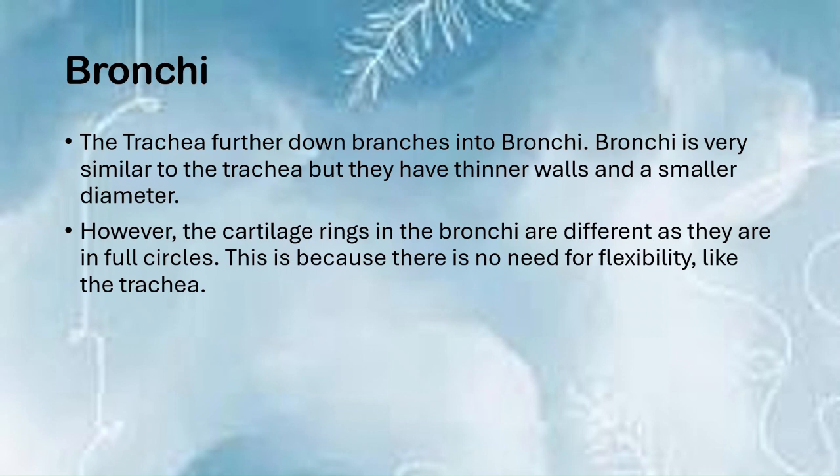The trachea splits into two branches called the bronchi. The bronchi are similar to the trachea but have thinner walls and a smaller diameter. Thinner walls increase the rate of diffusion, and the smaller diameter reduces the diffusion distance, further increasing diffusion rate. However, the cartilage rings in the bronchi are full circles rather than C-shaped, because there is no need for the same flexibility as in the trachea.